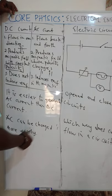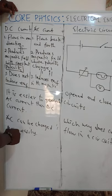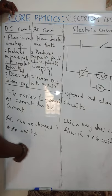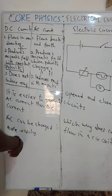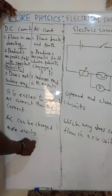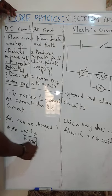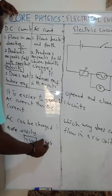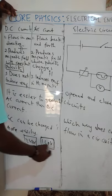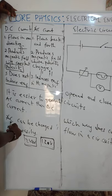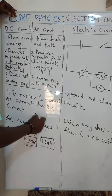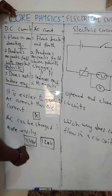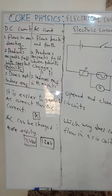AC can also be changed more easily. For example, in our homes we get 240 volts, but some devices use only 120 volts. If you want to use 120 volts, you need to step the voltage down, and this can easily be done with AC. But if you are using DC, it is very difficult to do. These are the two main reasons why we prefer using AC currents in our homes compared to DC currents.